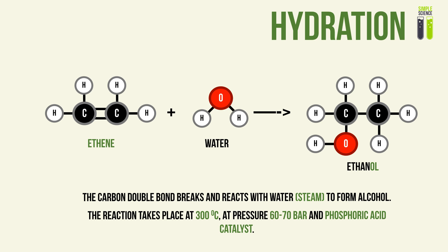The next type of reaction is hydration. In this case, our reactants are water and ethene. When water in the form of steam reacts with an alkene, you get an alcohol — which is another homologous series we'll cover in the next video. The carbon double bond breaks, one hydrogen-oxygen bond in water breaks, and the OH bonds with one carbon atom while the remaining H bonds with the other carbon atom, forming an alcohol.